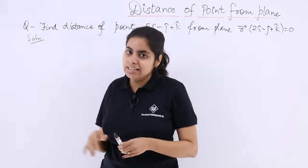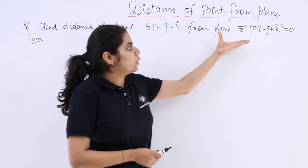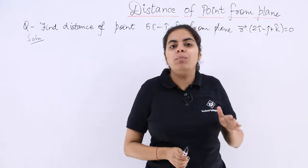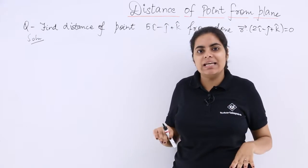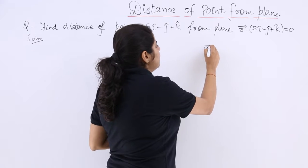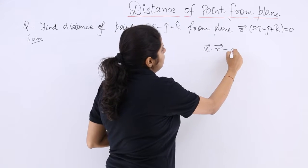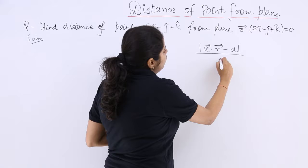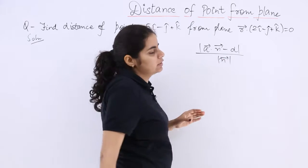So this is the question which says find distance of the point from the plane. The formula for vector form in this case is |a vector dot n vector minus d| over mod of n vector.